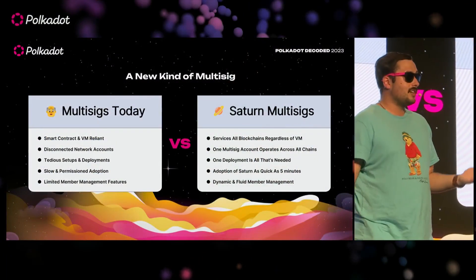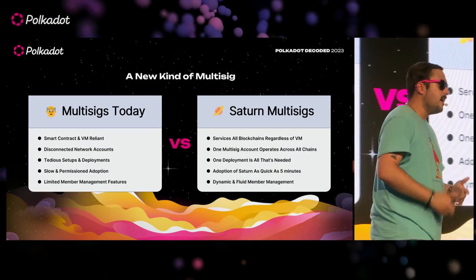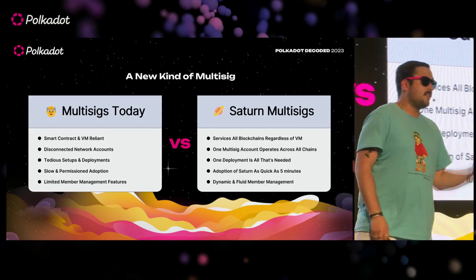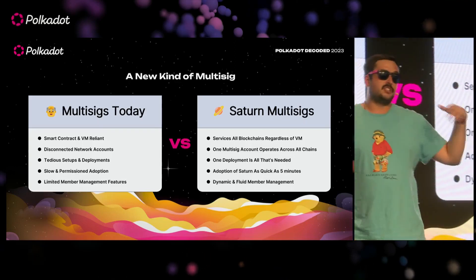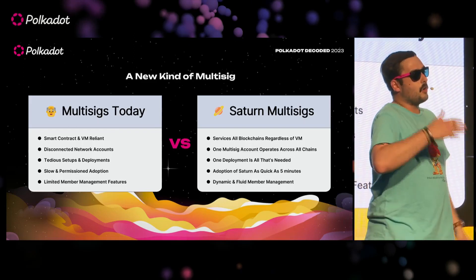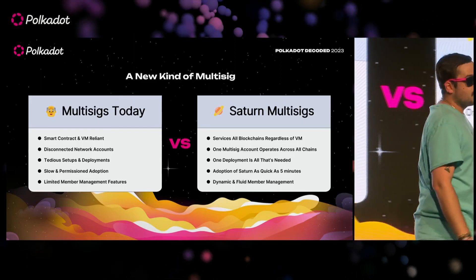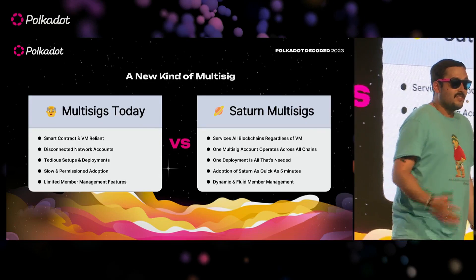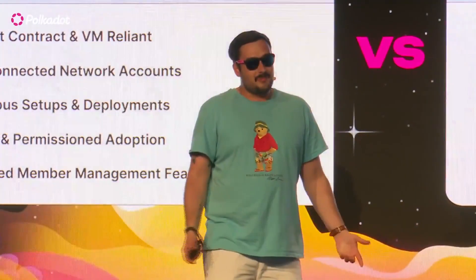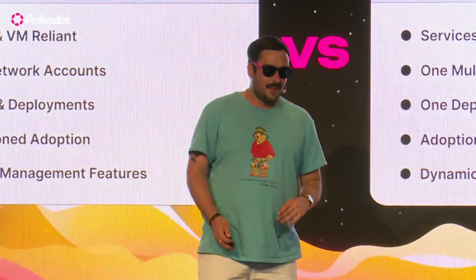Especially if you're an organization with different members and different roles in your multi-sig — if you want to make a change on one network, you have to submit a proposal and pay transaction fees on every single one of those networks. Whether it's three chains or 50 chains in the Polkadot ecosystem, that's a pain, which is one of the things that we look to solve.